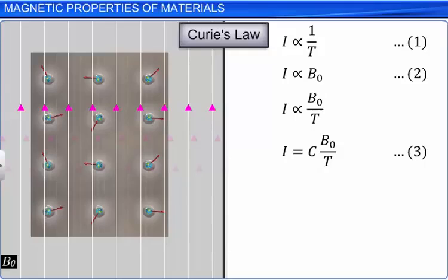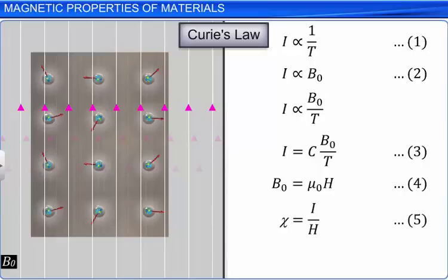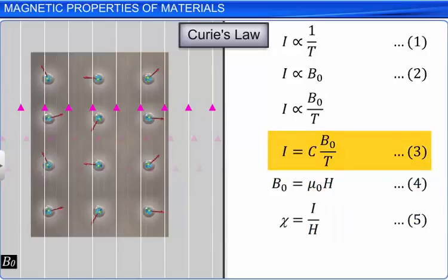We know that B0 is equal to μ0H — let this be equation 4. We also know that the ratio of magnetization to magnetic intensity is magnetic susceptibility, that is, chi equals I by H — let this be equation 5. Substituting equations 4 and 5 in equation 3 and on simplification, we get chi equals C times μ0 by T. This is known as Curie's law, where C is called Curie's constant — let this be equation 6.